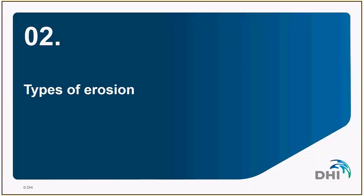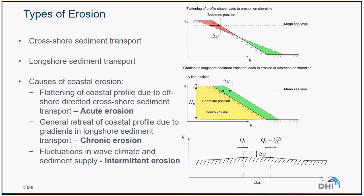There are different types of coastal processes which lead to different types of sediment transport, and this can lead to different types of erosion. Acute erosion is typically the flattening of the coastal profile due to offshore-directed cross-shore sediment transport — it's usually very episodic, event-related erosion. Chronic erosion is typically connected to longshore sediment transport and consists in a general retreat of the entire coastal profile due to a gradient in longshore sediment transport. We can also mention intermittent erosion, which is due to fluctuations in wave climate and sediment supply.